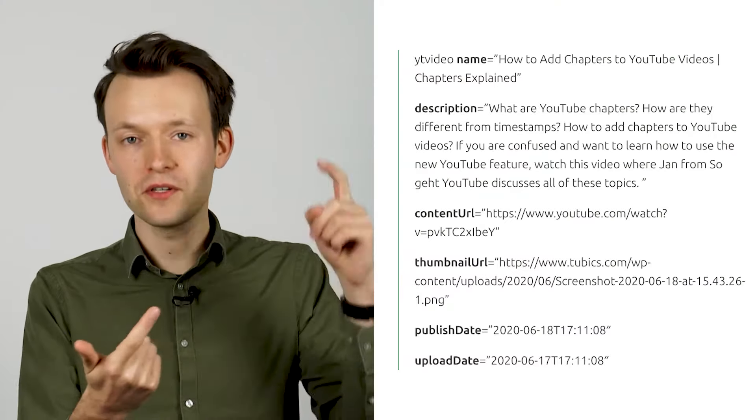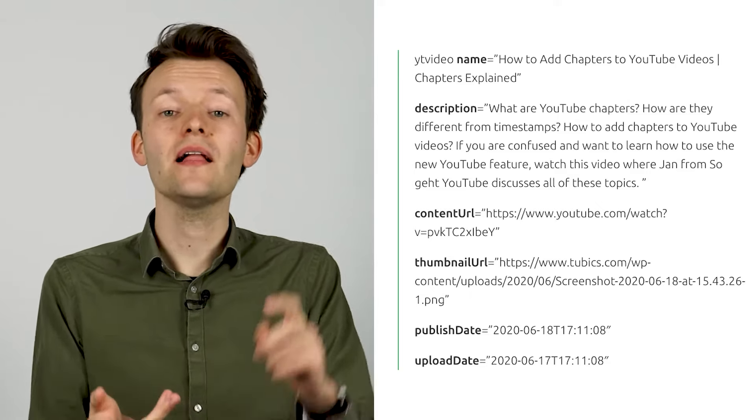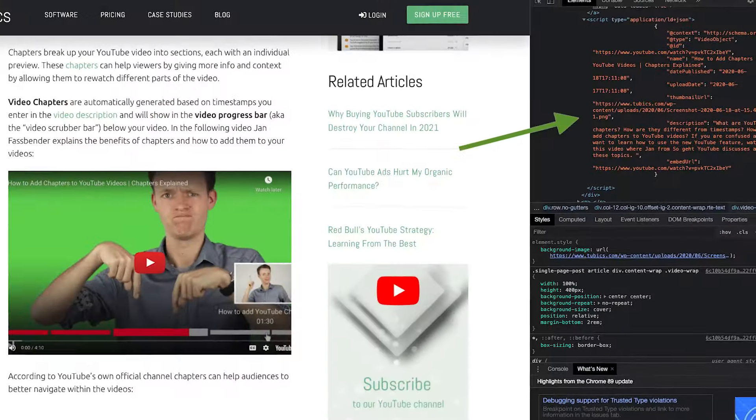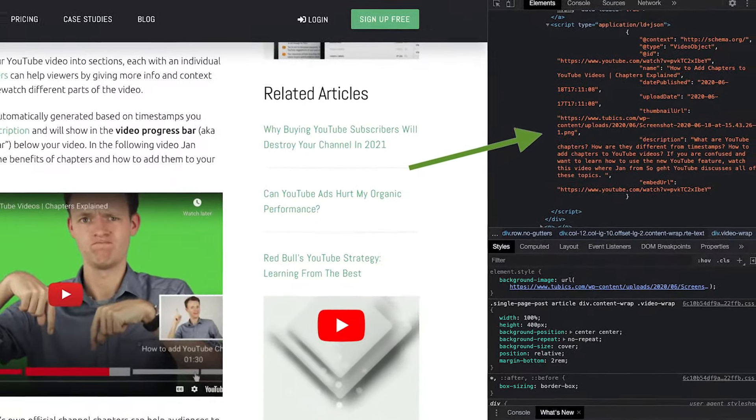What we use are the name, the description, the content URL, the thumbnail URL, the upload date and the publish date. If you include this information, Google can get a better understanding of your video.